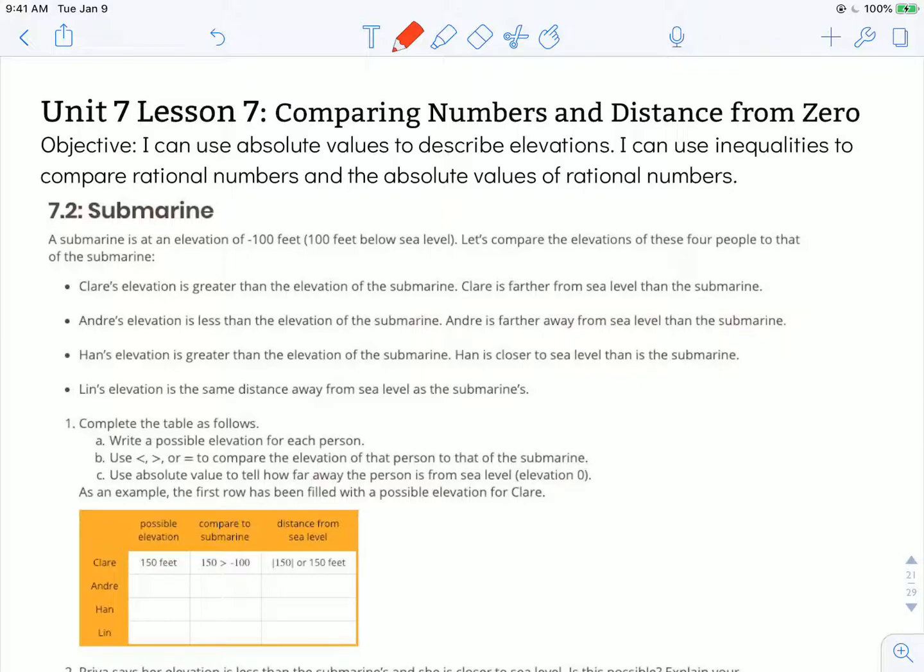A submarine is at an elevation of negative 100 feet, or 100 feet below sea level. Let's compare the elevations of these four people to that of the submarine. Claire's elevation is greater than the elevation of the submarine.